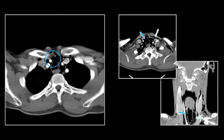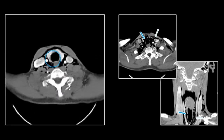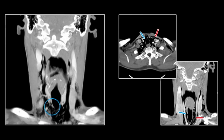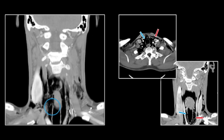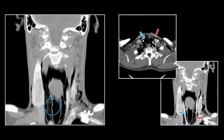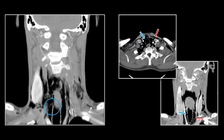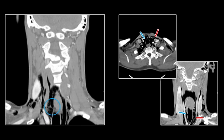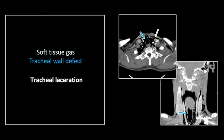There it is on the axial. Again, I encourage you to use lung windows and to view all orthogonal planes. There it is, shown very nicely on the coronals. So that is a tracheal laceration, a stabbing by a steak knife.